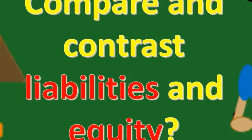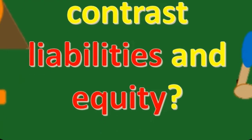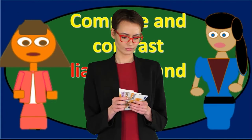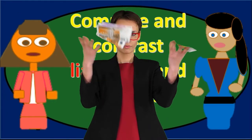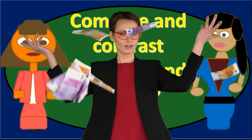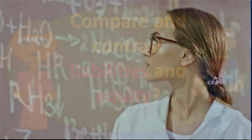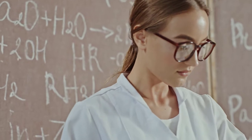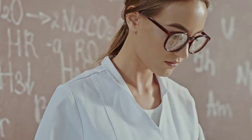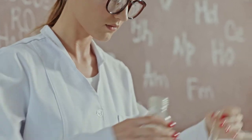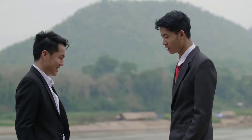Liabilities and equity both list the claims to total assets by those who have claims to those assets. This also explains why liabilities and equity tend to have normal credit balances, whereas assets mostly have normal debit balances. So the similarities are: one, they are both on the right side of the accounting equation; and two, they both represent claims — one being a claim by a third party and the other being claims by the owners, whether it be a sole proprietor, partnership, or corporation.